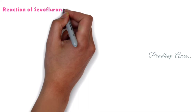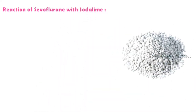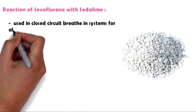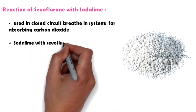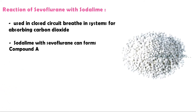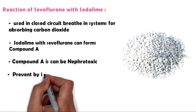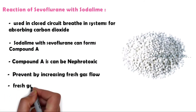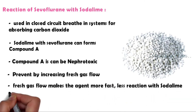The reaction of Sevoflurane with sodalime: Sodalime is a carbon dioxide absorbent used in closed circuit breathing systems for absorbing CO2. However, sodalime reacting with Sevoflurane forms Compound A, which can be nephrotoxic. This can be prevented by increasing fresh gas flow to 2 liters per minute, which makes the agent faster, causes less reaction with sodalime, and results in less formation of Compound A.